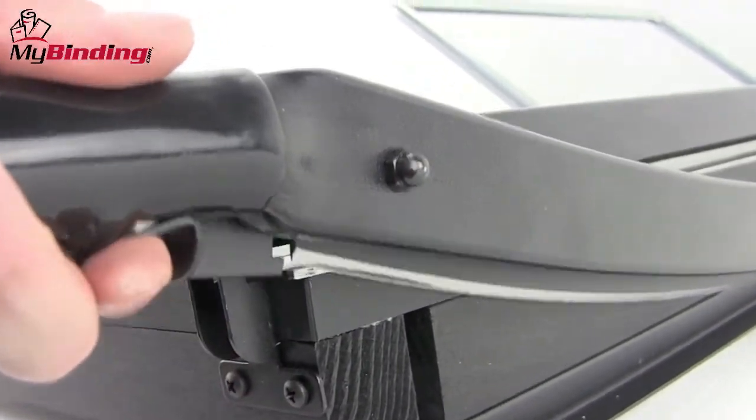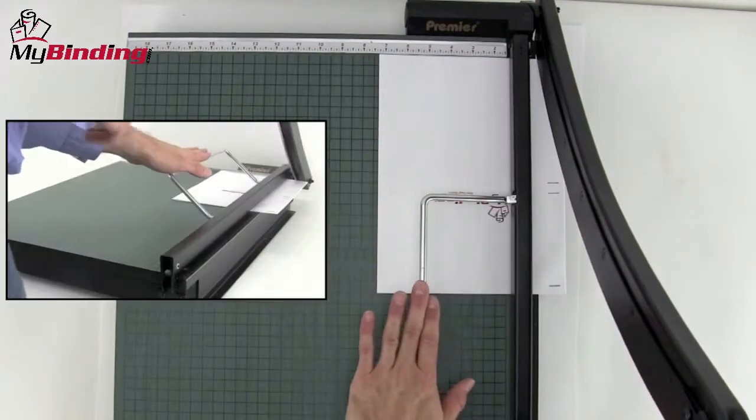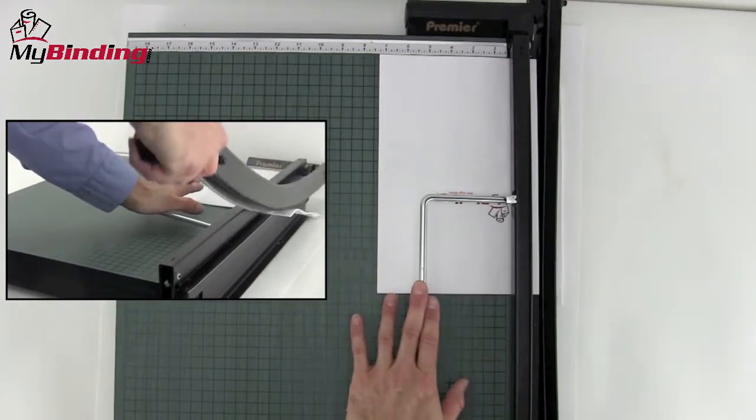A finger toggle holds the blade in place for safety when not in use. A finger guard runs the entire length of the 24-inch blade. The hand-operated clamp holds items securely for accurate cutting.